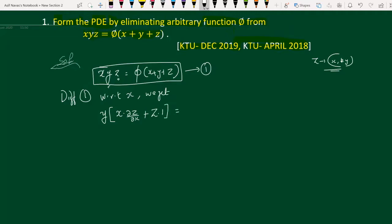We apply the chain rule on the right-hand side: φ′(x+y+z) multiplied by the derivative of (x+y+z) with respect to x, which is 1 + 0 + p, where p = ∂z/∂x. This gives us equation number 2.